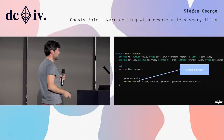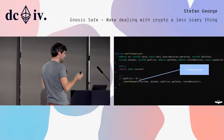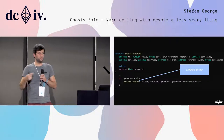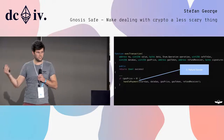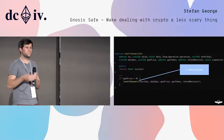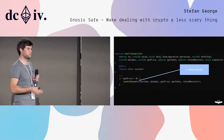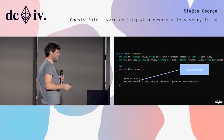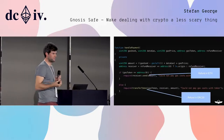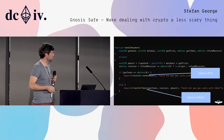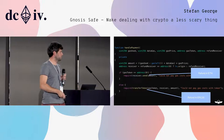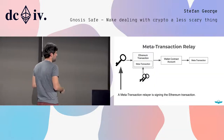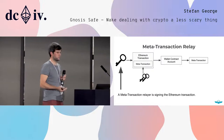Now what we can do is define the meta transaction such that we refund whoever is signing the Ethereum transaction and sending the meta transaction to the contract. We can do this in two ways: we can refund in Ether, or we can refund in any ERC20 token.